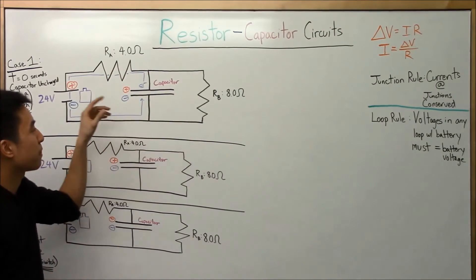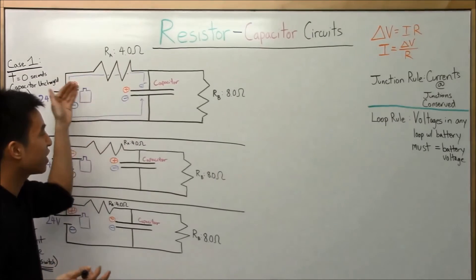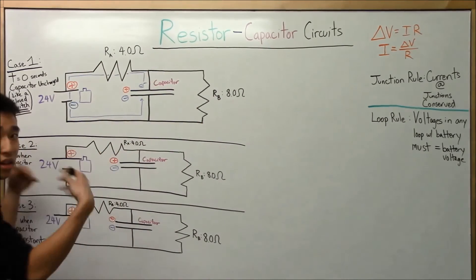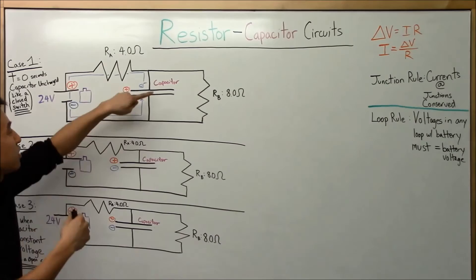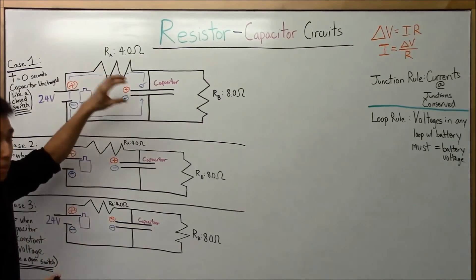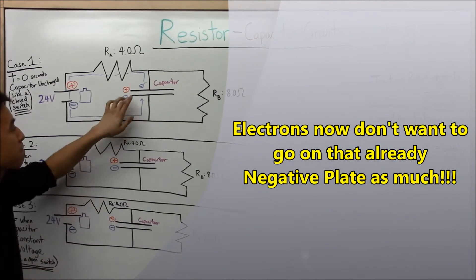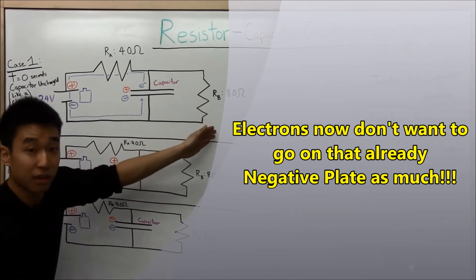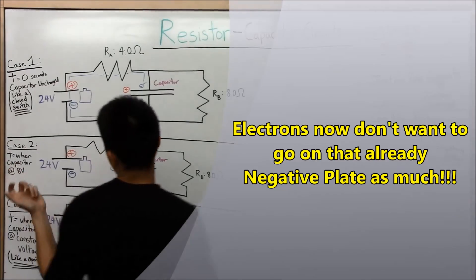So maybe 90 to 99% of electrons are still going through the capacitor path, and 1% through the resistor path. As time goes on, the voltage increases, more electrons load onto the negative plate, the potential goes up, resistance goes up, and more electrons flow through the resistor path. That's when we get to Case 2 — when the capacitor is already charged up to 8 volts.